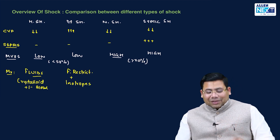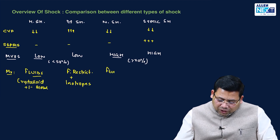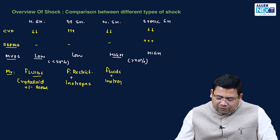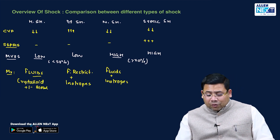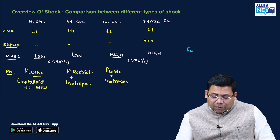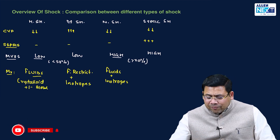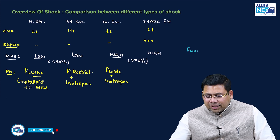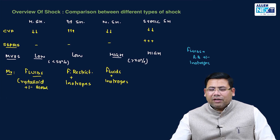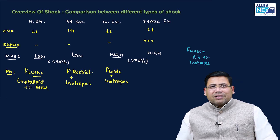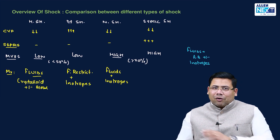For neurogenic shock, you require ample fluids along with inotropes. For septic shock, the classical management is a lot of fluids, plus antibiotics, and plus or minus inotropes. So this was a brief overview of the four types of shock and their key parameters.